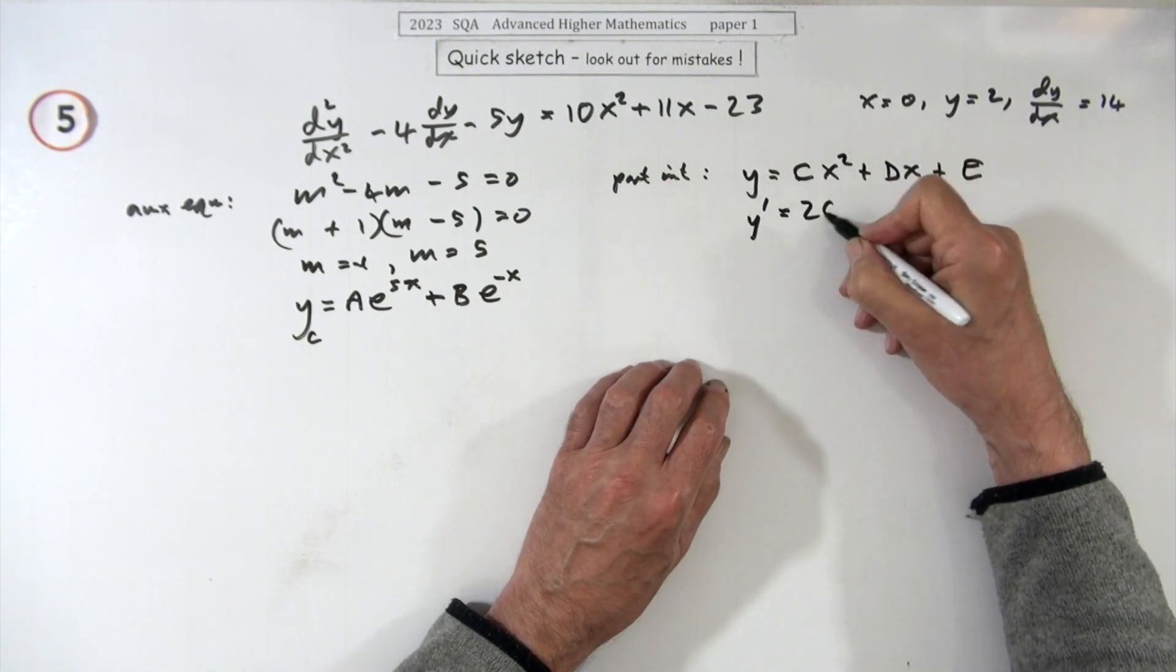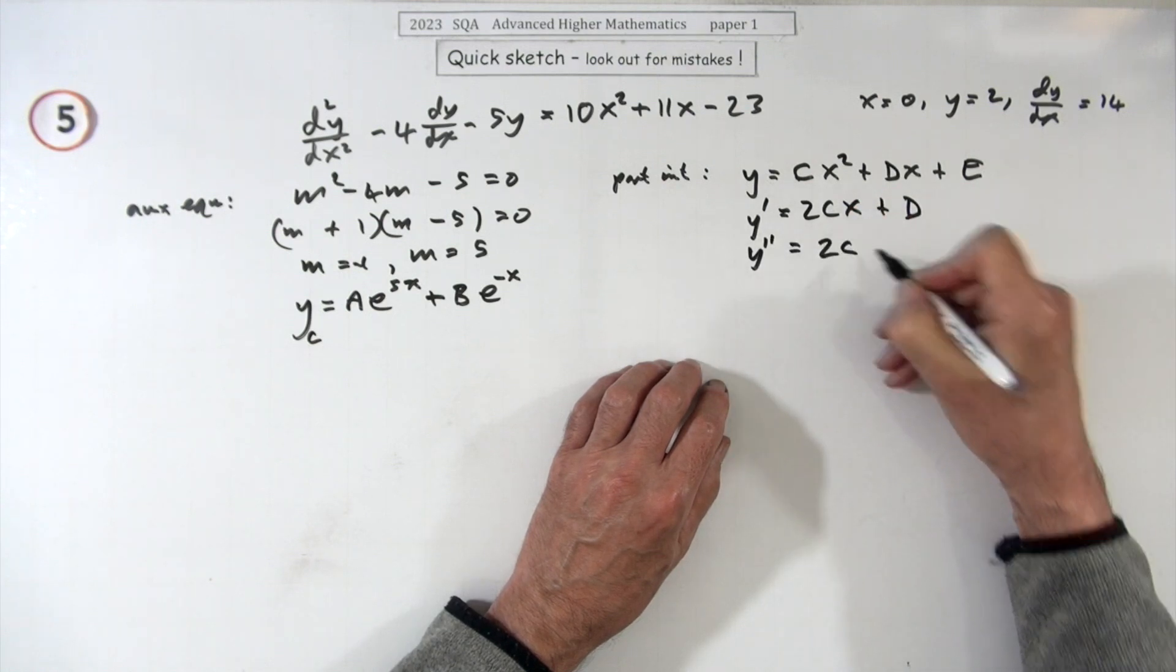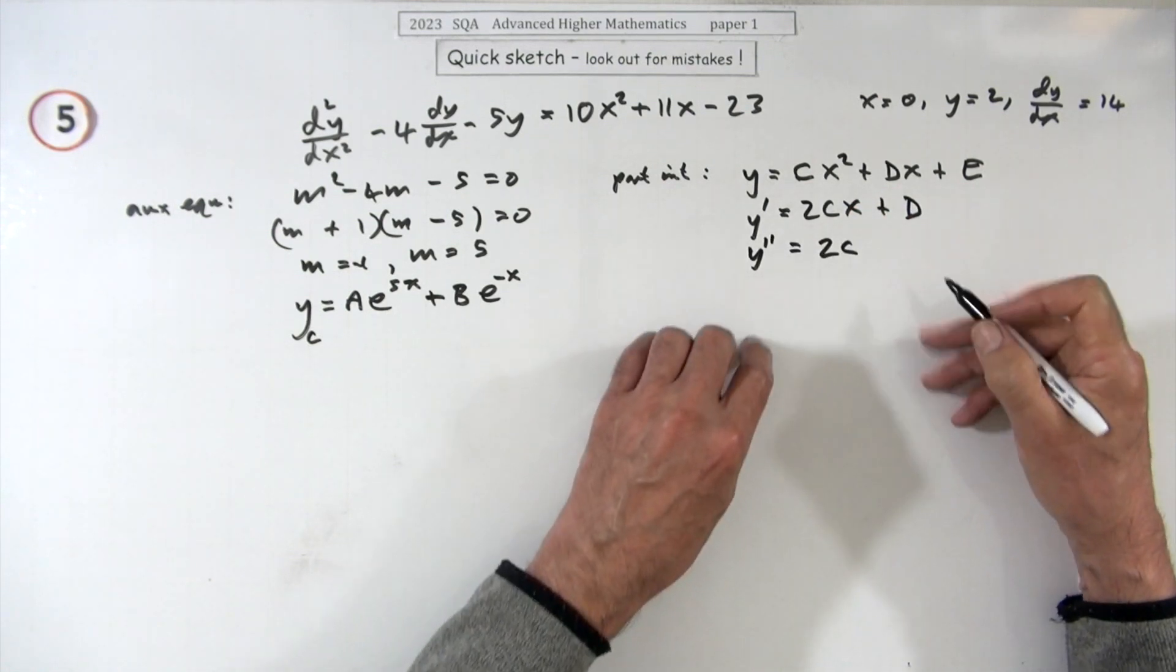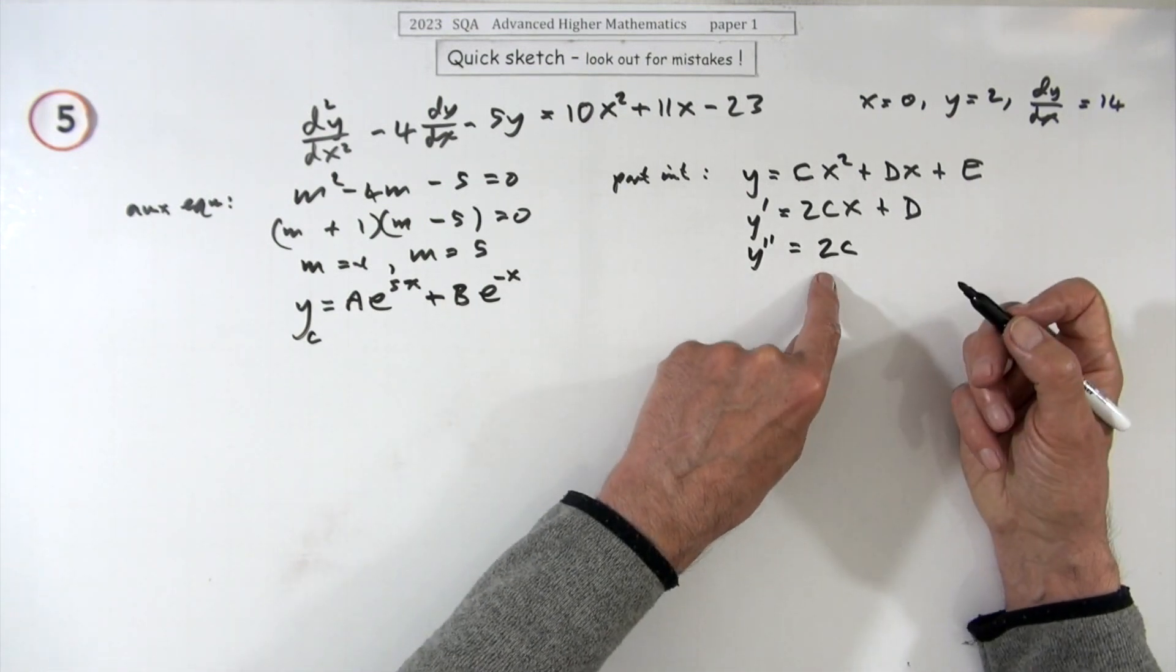So y dashed is going to be, so that goes to 2cx and that's just d, and then y double dashed is just 2c and any more and there'll be no trace left of it.